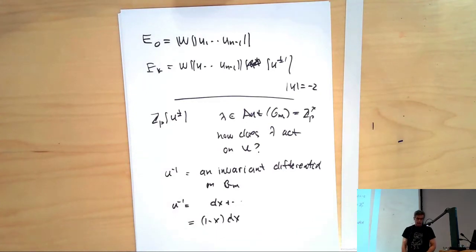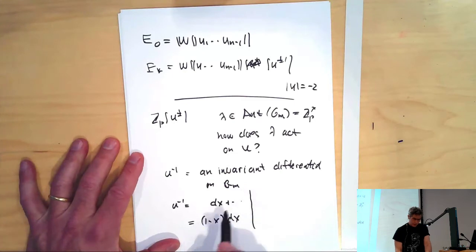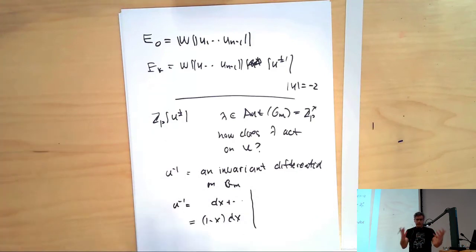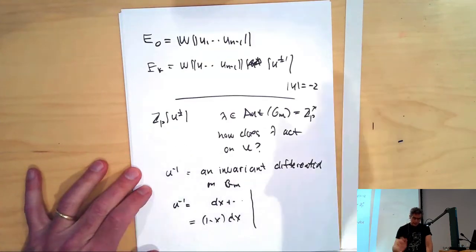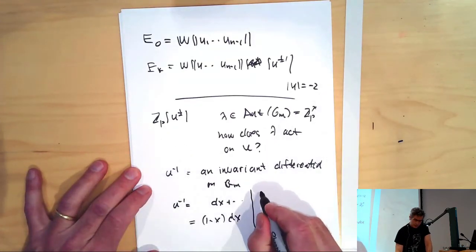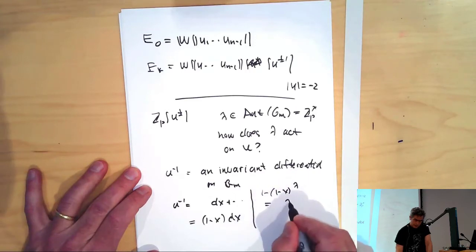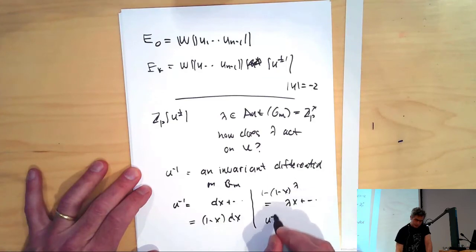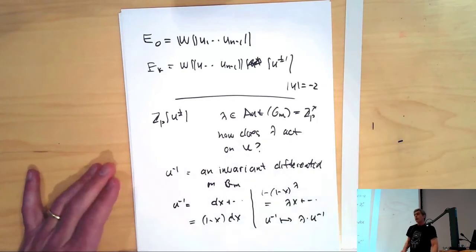Obviously I don't really have to work with this differential — I just have to check the value at the identity, since it's automatically translation invariant. So if I take 1 minus (1 minus x)^lambda, that's going to be lambda·x plus higher terms. And so I find that u inverse goes to lambda times u inverse.